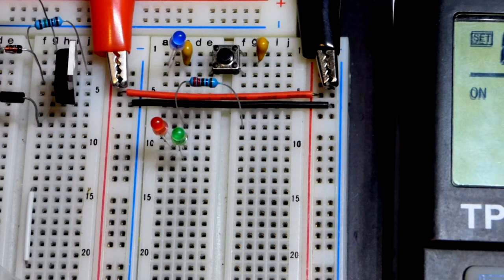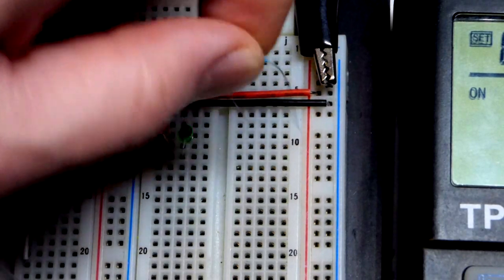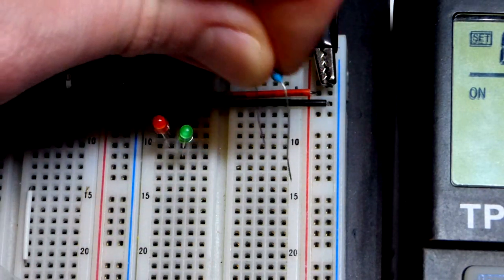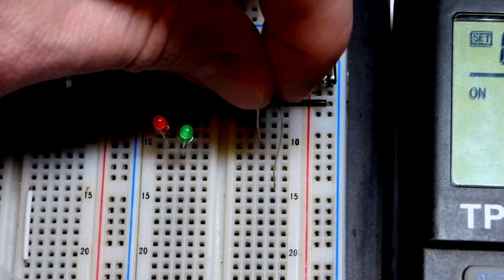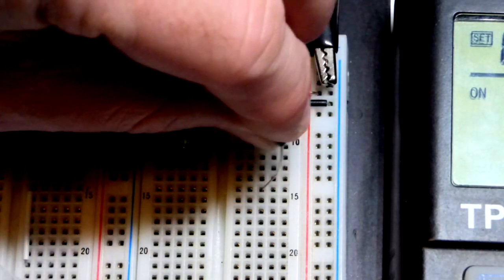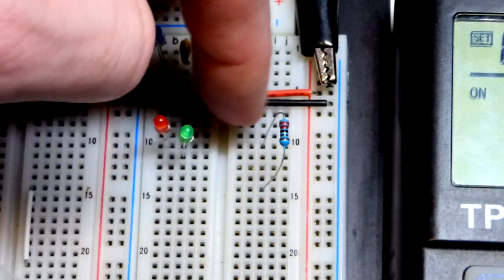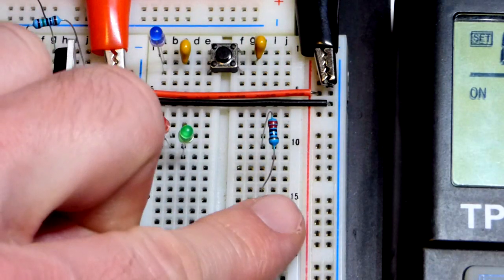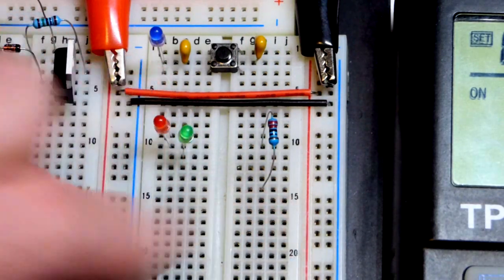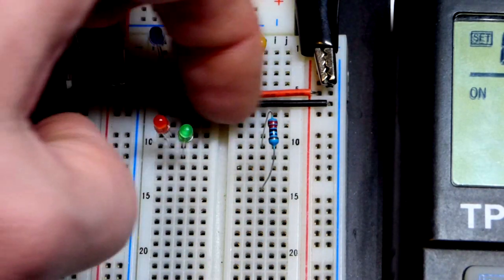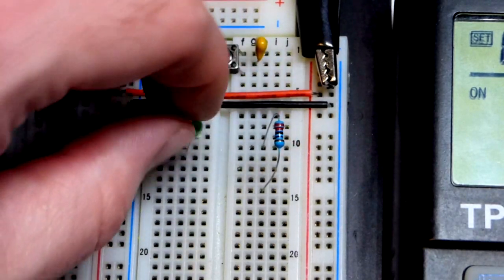So here we are at the breadboard. We'll take the resistor and we're not going to use the power rails. We're just going to put the two sides of the resistor onto two separate rows. So it goes five holes across, that's a connection five across right there and then five across up there. They're separate rows.